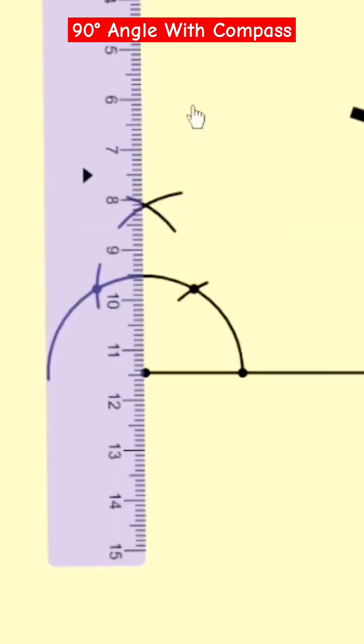So just you need to take the ruler and make a straight line. Take the ruler, make a straight line from the starting point and that's it, your 90 degree angle.